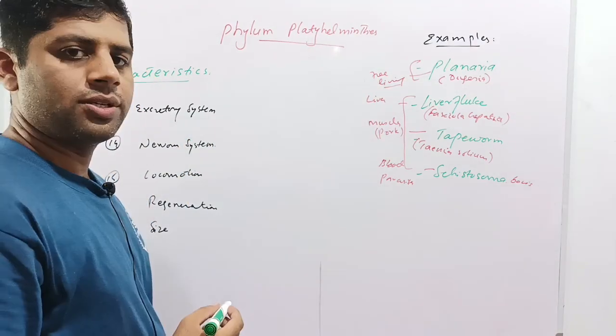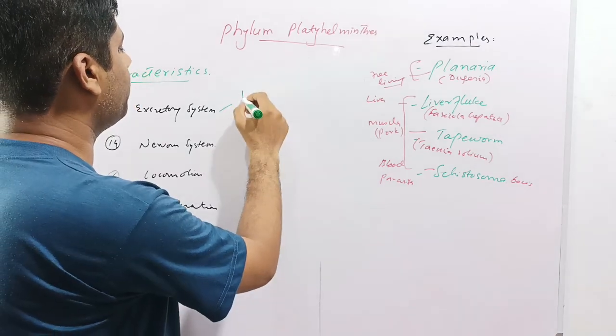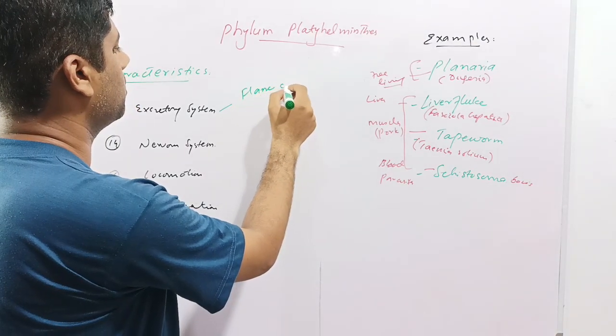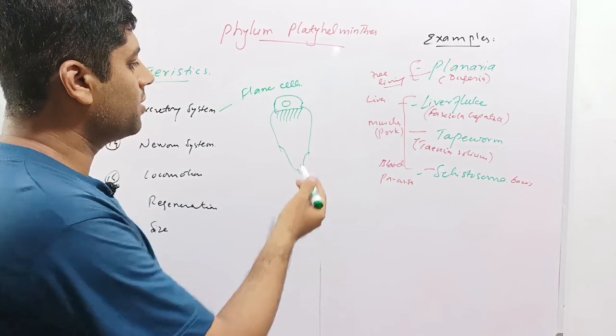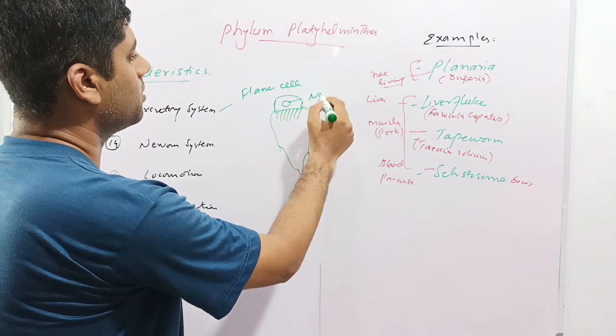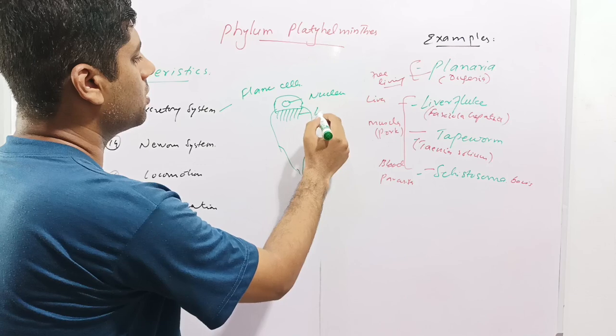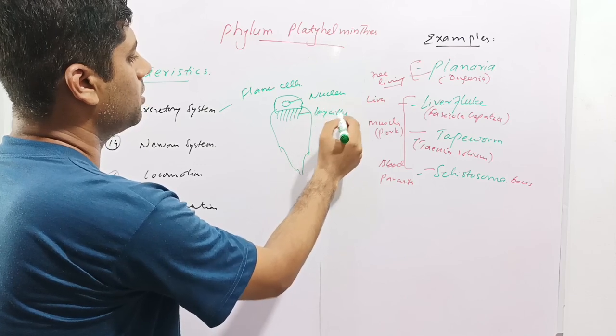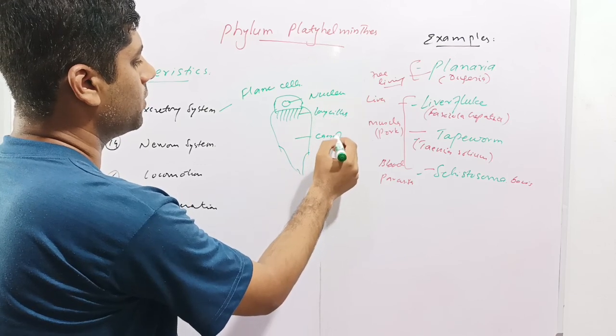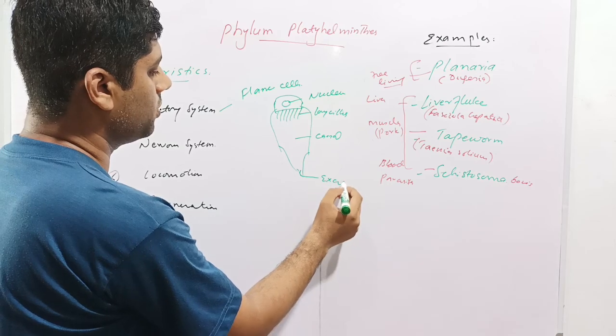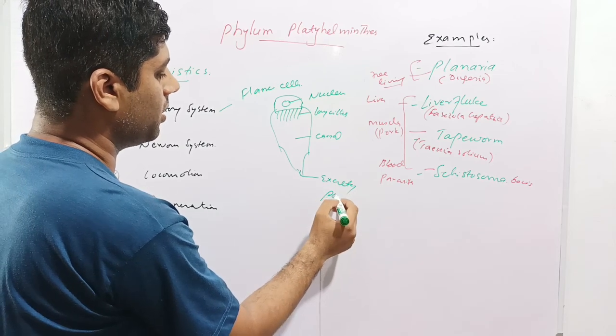Next is the excretory system. The excretory system in helminths comprises flame cells. Let's consider this diagram as a flame cell. It has a single nucleus, long cilia, the canal, and excretory pore. So these are the four components of the flame cell.